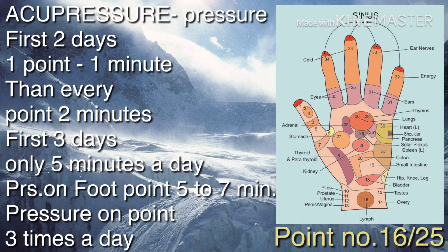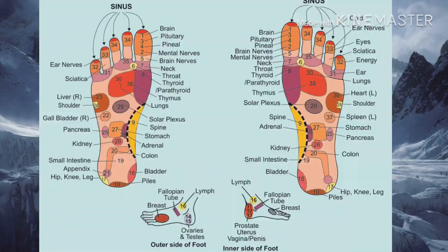Acupressure for diabetes: apply pressure on key points. For the first 2 days, apply 1 minute pressure per point, then 2 minutes per point. For the first 3 days, only 5 minutes a day total. Apply pressure on foot points for 5 to 7 minutes, 3 to 4 times a day.